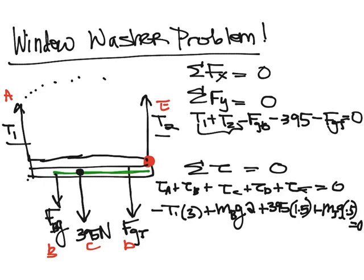Now I can start plugging the numbers in. I know that I have minus 3 T1. Bob has a mass of 805 Newtons, so 805 times 2 is 1610. Plus 395 times 1.5 ends up being 592.5. Joe's mass is 820 Newtons. So I have plus 820 times 0.5, which is 410.